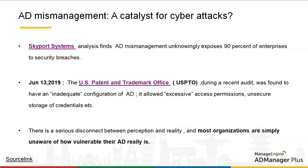On June 13, 2019, the US Patent and Trademark Office (USPTO), during a recent audit, was found to have an inadequate configuration of Active Directory — it allowed improper access permissions, the usage of weak user credentials, and unsecure storage of credentials. There is a serious disconnect between perception and reality, and most organizations are simply not aware of how vulnerable their Active Directory really is.